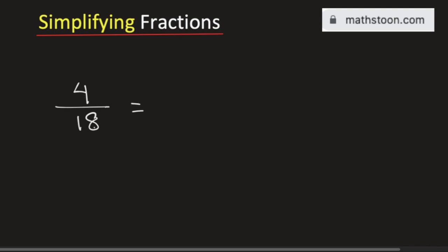See that both 4 and 18 can be written as a product of 2 and something. We can write 4 as 2 times 2 and 18 as 2 times 9.